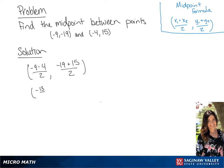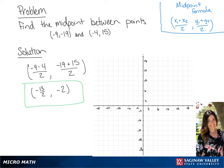If we simplify, this is going to give us our midpoint of negative 13 over 2, negative 2. Now we're going to plot the line on our graph using the original points. Now we can draw our line and plot our midpoint.